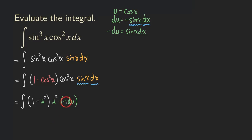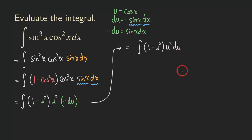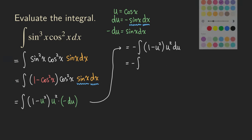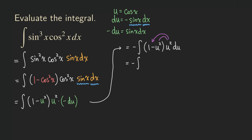This negative one is a constant, so we can move it outside the integral. In the next step we get negative integral of (1 minus u squared) times u squared du. Because this is a product, we should distribute before integrating. Distributing u squared gives us negative integral of u squared minus u to the 4th, then du.